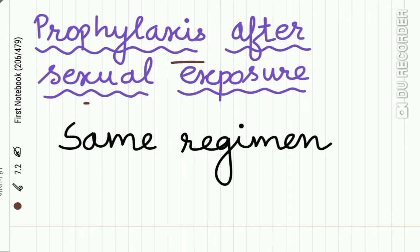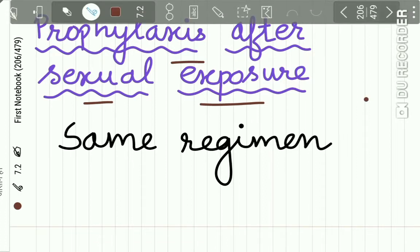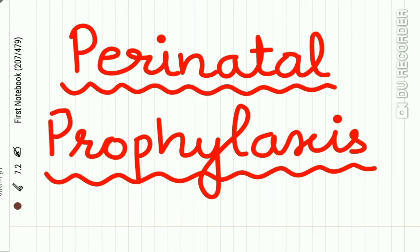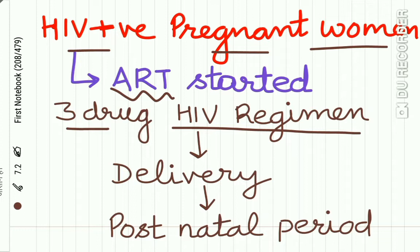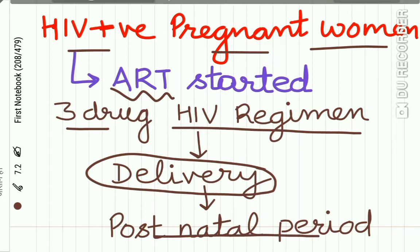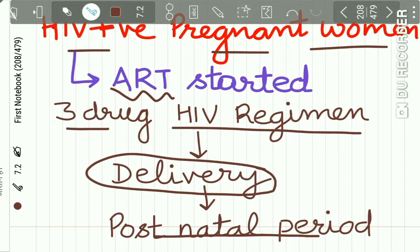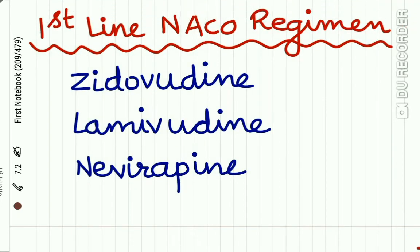The prophylaxis after accidental sexual exposure remains the same as that for needle stick injury. For perinatal prophylaxis, all HIV-positive pregnant women should be started on antiretroviral therapy immediately. They are put on a three-drug anti-HIV regimen, and therapy is continued through delivery and the postnatal period to reduce or avoid the risk of vertical transmission from mother to child.